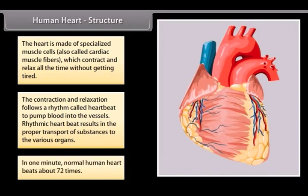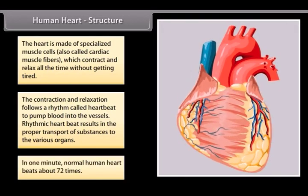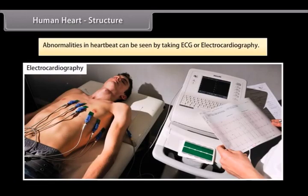In one minute, normal human heart beats about 72 times. Abnormalities in heart beat can be seen by taking ECG or electrocardiography.